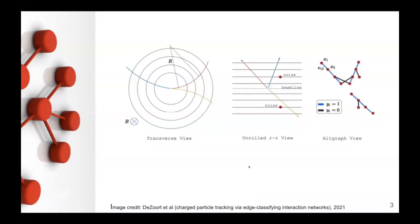So this image shows the first image shows a transverse view of a generic particle tracker. And as you can see, the particle coming in and then breaking apart into two separate particles going into two different directions. And the second image shows what they call an unrolled RZ view. And then this third image shows the edges and nodes that I was talking about earlier, where the blue part are the edges and the red paths are the particle hits.